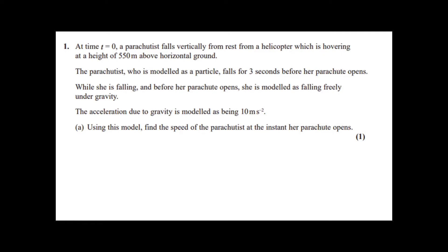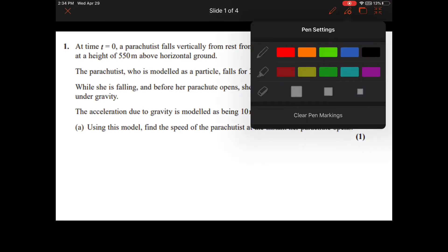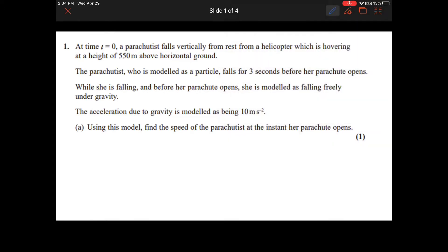Question 1a is the easier one. At time zero, a parachutist falls vertically from rest — that implies the initial velocity is zero. She falls from a helicopter hovering at 550 meters above the ground. That height detail is actually irrelevant at this point because we're just going to talk about the speed she reaches in three seconds. The parachutist is modeled as a particle and falls for three seconds before her parachute opens.